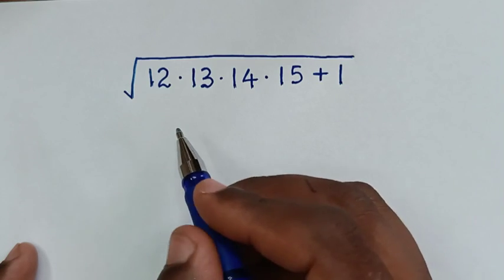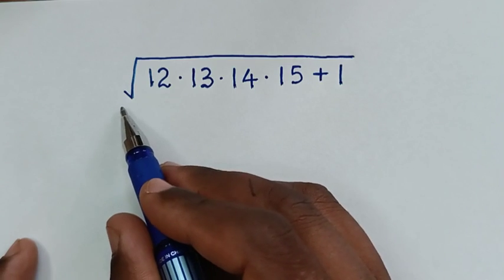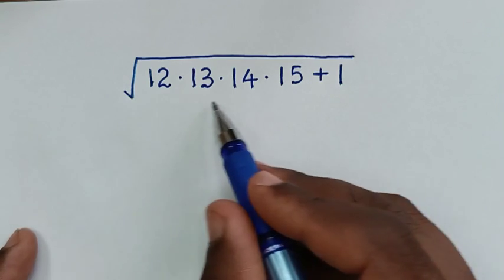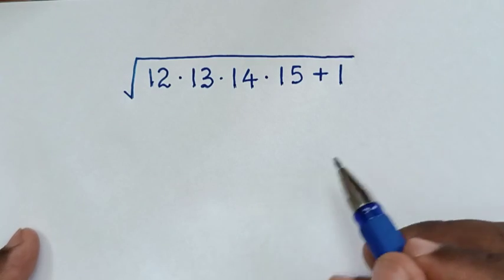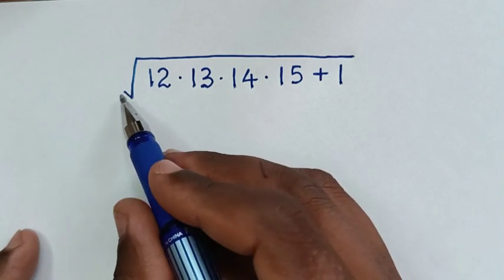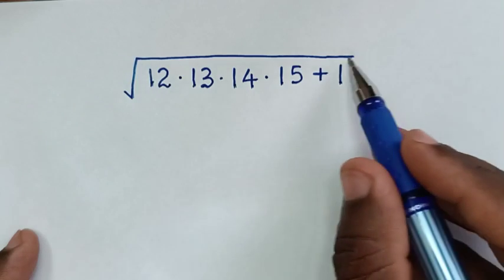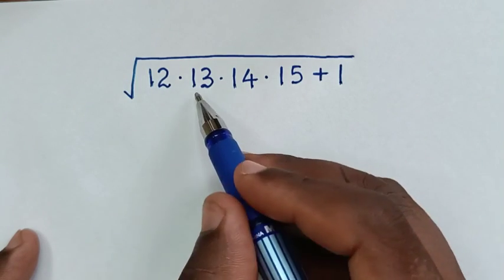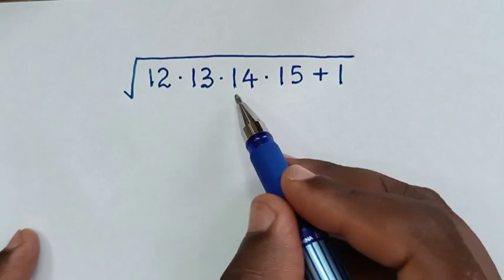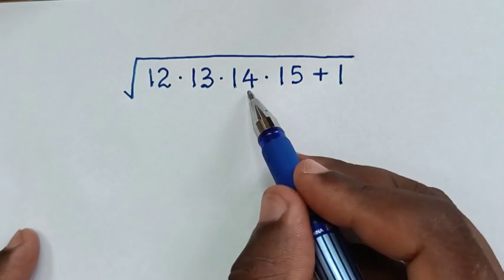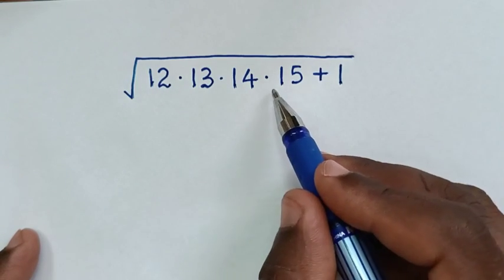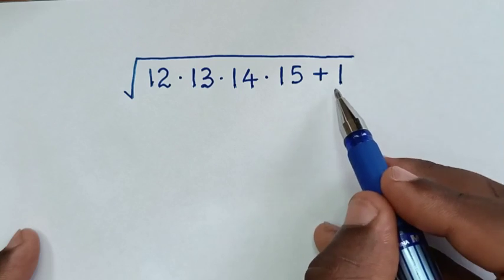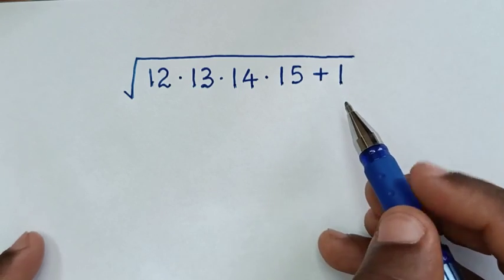Hello, you are welcome to solve this math problem: find the value of the square root of 12 times 13 times 14 times 15 plus 1.